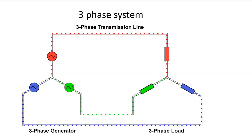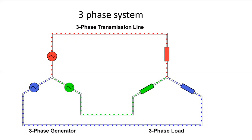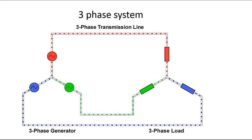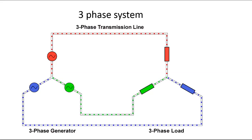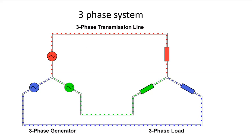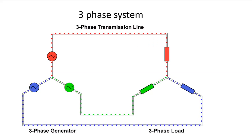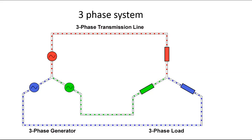Three-phase system is used for industrial loads. An example of an industrial load is a lift system. So, three-phase system - what is its definition? Three-phase system practically contains three different windings.